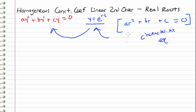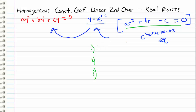If you want to see more on that, go ahead and watch my previous video. After we solve this equation using factoring or the quadratic formula, we're going to get two roots because it's a quadratic equation. There are three cases depending on what we get for r. The first case, which is covered in this video, is when r1 and r2 are both real numbers.